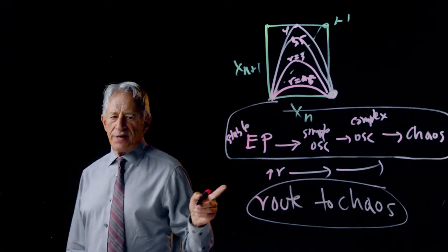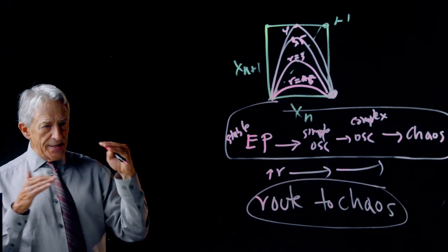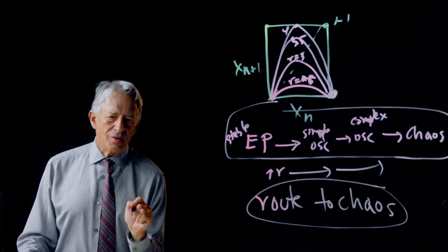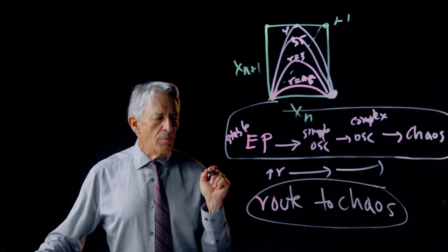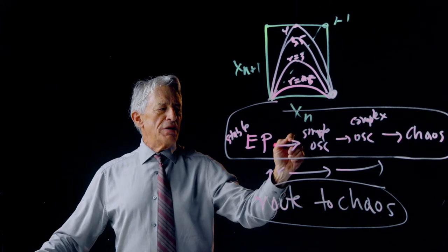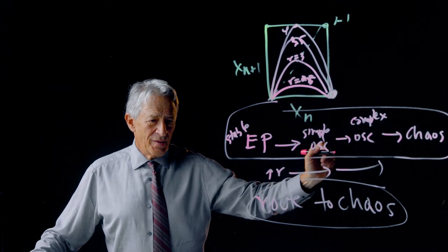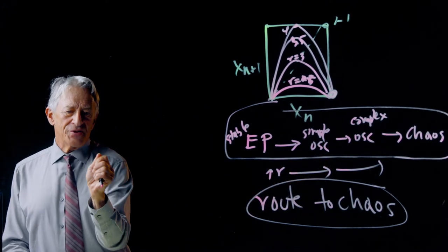And a route to chaos is a sequence of bifurcations that invariably take the form equilibrium, oscillation, complex oscillation, chaos, as that parameter is increased.